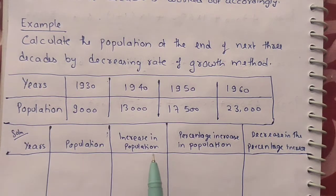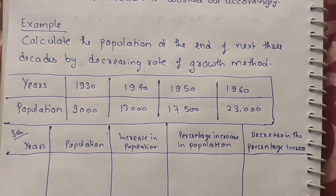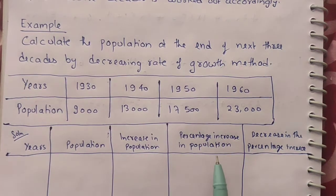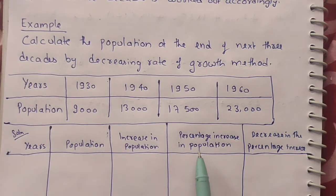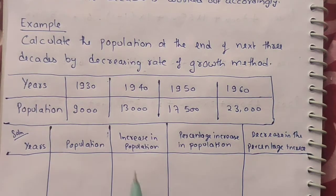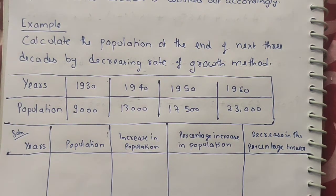In the incremental increase method, we had a fourth column for incremental increase. Here, the fourth column will be percentage increase in population, and the fifth column will be decrease in the percentage increase. So the population is increasing, but we need to find what percentage it is increasing by, and then how much that percentage is falling each decade.